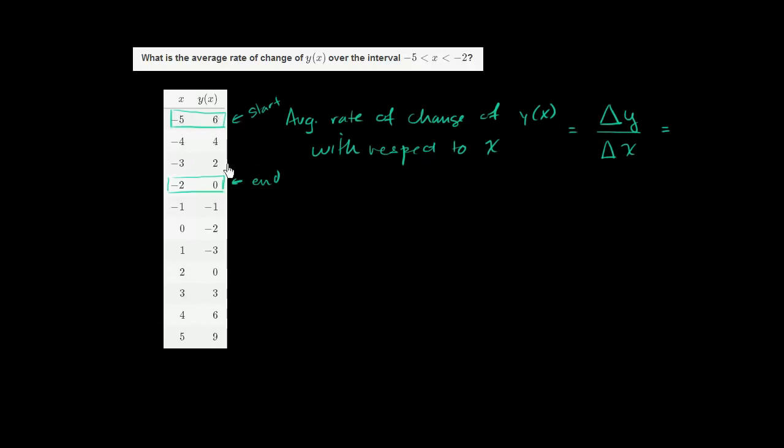So we start at 6. We end at 0. So our change in y is going to be negative 6. We went down by 6 in the y direction. It's negative 6.